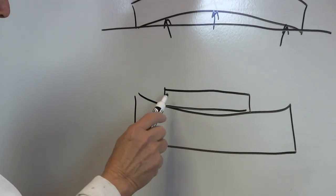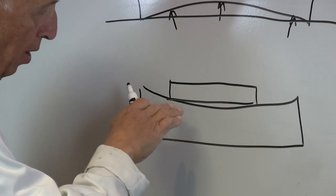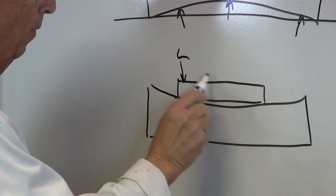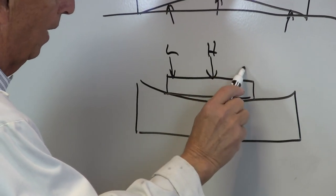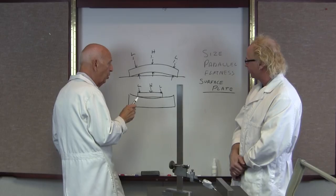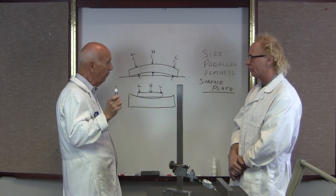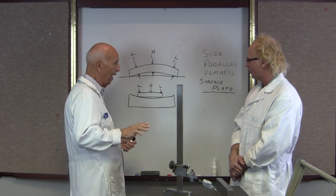We put our parallel on there like so, and let's say that this parallel is actually straight, square, flat, parallel, perfect. When I go in here to check it, my indicator is going to go down. The indicator stand is going to go down in this hole, which means it's going to show this as low and this as what? High. That's correct. It's going to be high and this is going to be low.